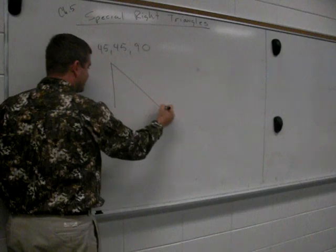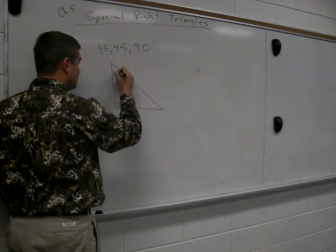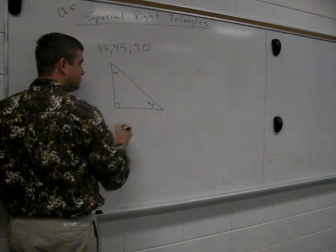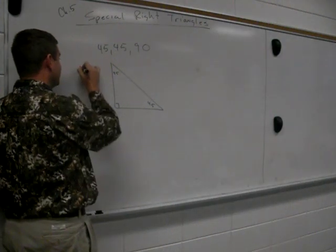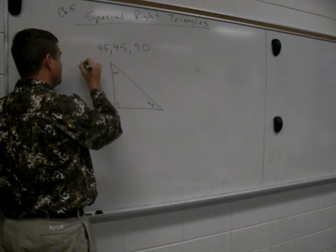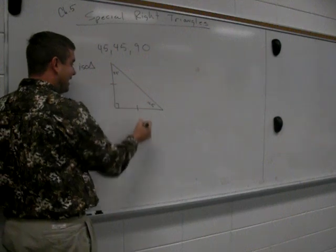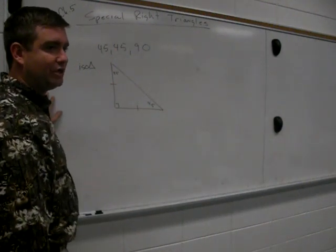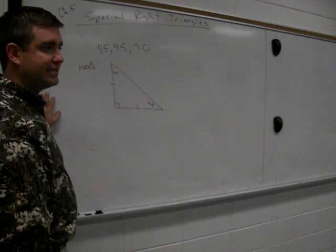By definition, a 45-45-90 triangle looks like this. It is an isosceles triangle. Isosceles meaning that the legs, to use a geometry term, the legs are congruent. They are the same length. When I have 45 and 45, this leg and this leg have to be congruent.